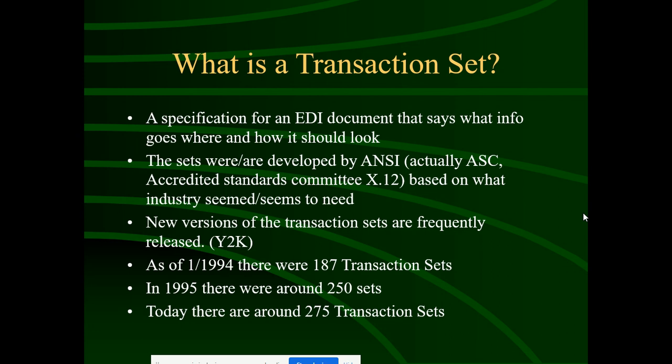The ASC X12 standards committee created transaction sets based on industry needs, and new versions are frequently released. By 1994 there were 187 transaction sets, and by 1995 there were around 250 transaction sets. In total, there are approximately 275 transactions available, and most companies and industries use these.